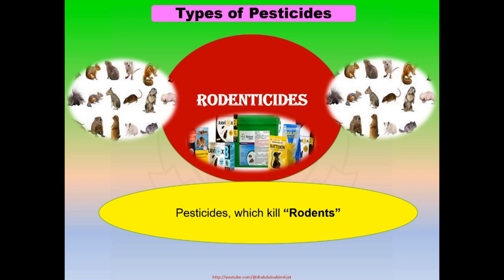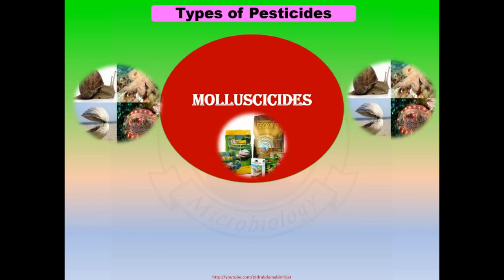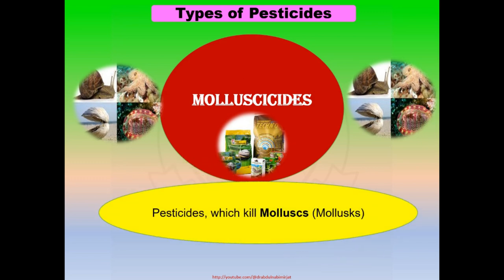Rodents include rats, mice, squirrels, nutria, and beavers. Molluscicides are the types of pesticides which kill molluscs.